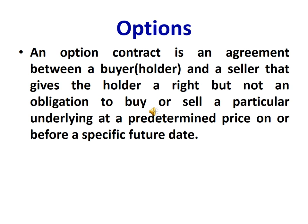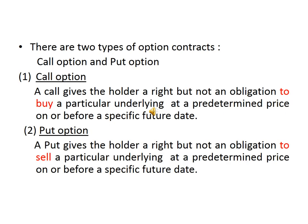An option contract is an agreement between a buyer (holder) and a seller that gives the holder a right, but not the obligation, to buy or sell a particular underlying at a predetermined price on or before a specific future date. There are two types of option contracts: call option and put option.